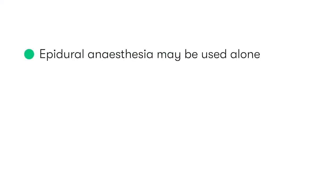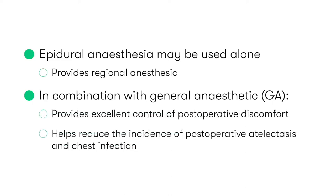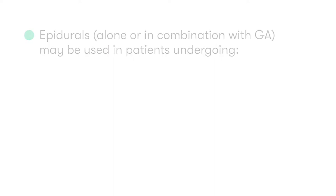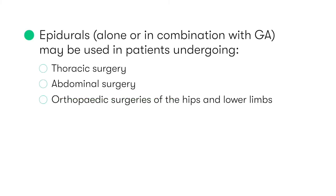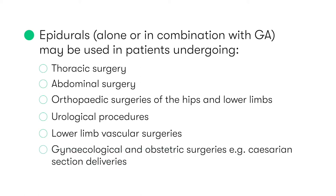Epidural anesthesia may be used alone, providing regional anesthesia, or it may be used in combination with general anesthetic, where it may provide excellent control of postoperative discomfort and help reduce the incidence of postoperative atelectasis and chest infections in patients undergoing major abdominal surgery. Epidurals, either alone or in combination with general anesthesia, can be used in patients undergoing thoracic surgery, abdominal surgery, orthopedic surgeries of the hips and lower limbs, urological procedures, lower limb vascular surgeries, and gynecological or obstetric surgeries such as a cesarean section.